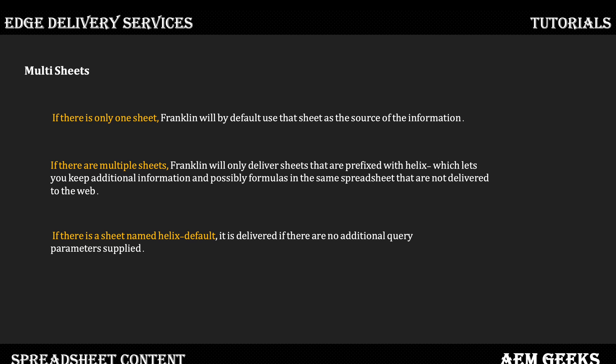If you have multiple sheets, as explained, your sheets should have the specific prefix 'helix-' followed by the name. If you have only a single sheet, you can name it 'helix-default' and that content will be available. If you want a specific sheet to be the default — so you don't need a query parameter to access it — name it 'helix-default'. We'll see that in detail in the demo.